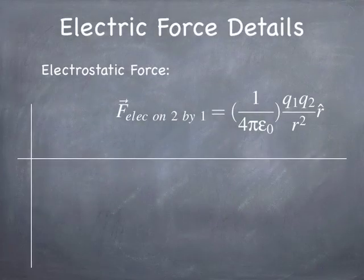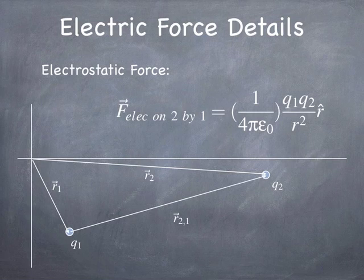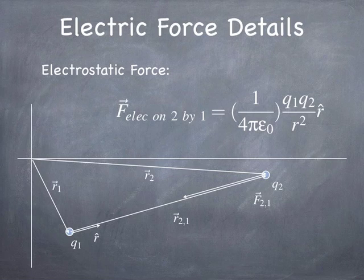The next force to discuss is the electrostatic force — it's very similar. We have a charge at R1 and a charge at R2. We calculate the relative position of charge 2 relative to charge 1, compute the length of that vector, get a unit vector, and plug in numbers to calculate the force. In this example I've assumed Q1 and Q2 have opposite charge, but of course if they have the same charge, the R-hat and force vector will point in the same direction. That's all there is to it — pretty straightforward.